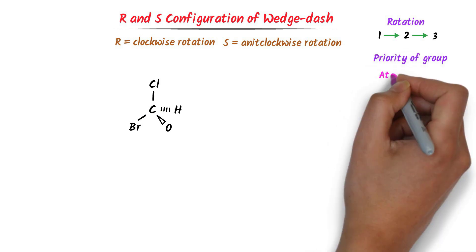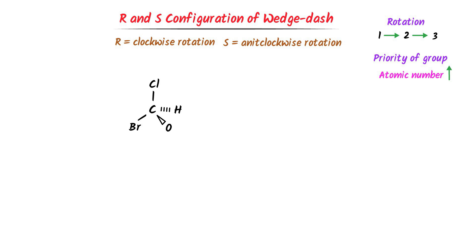Priority of a group depends on atomic number. Here, bromine has the largest atomic number, so first priority is given to bromine. Chlorine has a larger atomic number, so second priority is given to chlorine. Oxygen has a larger atomic number, so third priority is given to oxygen. Hydrogen has the least atomic number, so the least priority is given to hydrogen. That is why we call it LPG, or least priority group.